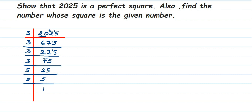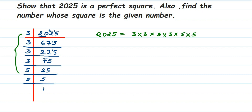So we've done the factorization. Let's write down the result: 2025 = 3 × 3 × 3 × 3 × 5 × 5. Now, if the number is a perfect square, the factors will always be in pairs. You can see here that 3 forms a pair, another 3 forms a pair, and 5 forms a pair — no factor is left single. This means that 2025 is a perfect square.